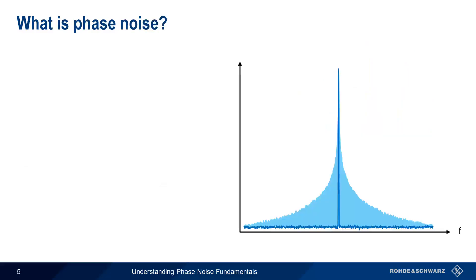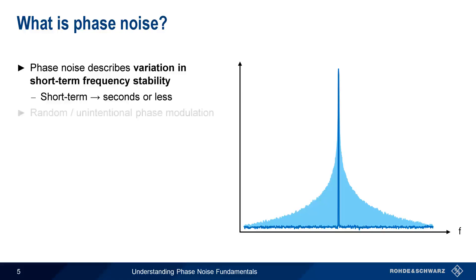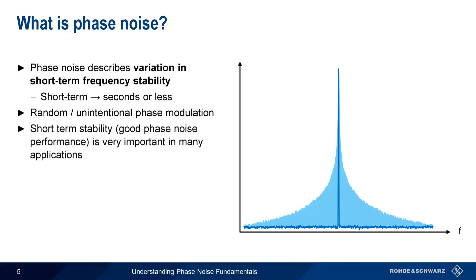Phase noise is a term used to describe short-term variations in phase or frequency stability. By short-term, we mean periods of seconds or less. Another way of defining or describing phase noise is random or unintentional phase modulation. Short-term stability, or good phase noise performance, is very important in a wide variety of RF applications. But this short-term stability can be very difficult to obtain, with substantial cost and complexity often associated with even modest increases in phase noise performance.